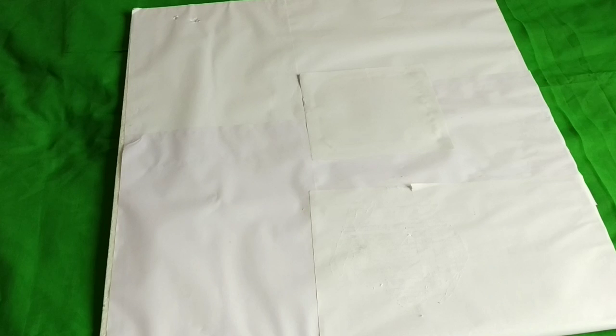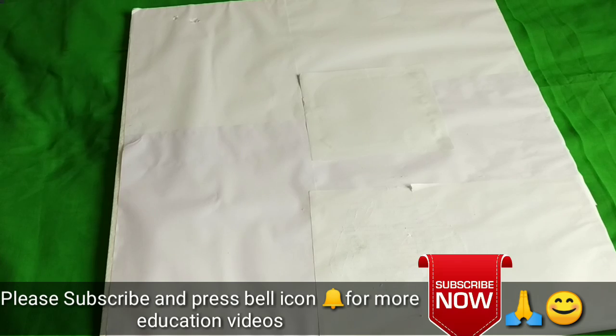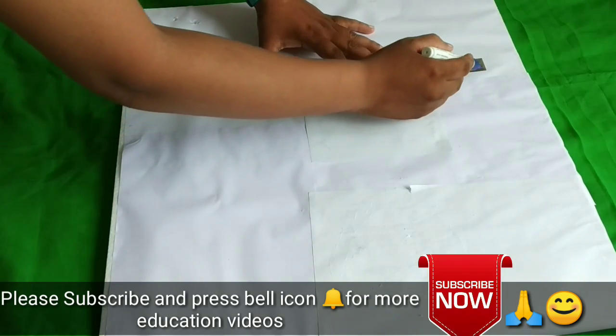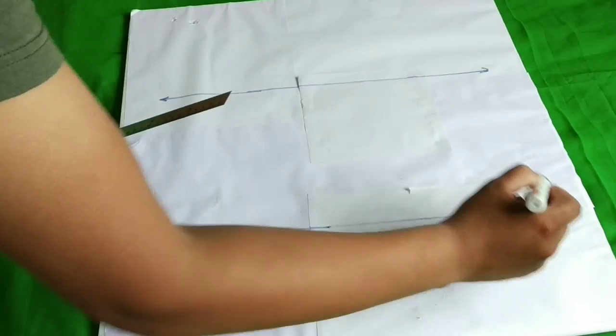So let us start our project. Take a thermocol sheet and paste paper on it, and then draw two parallel lines like this and give them names: line M and line N.